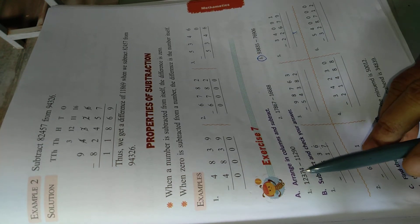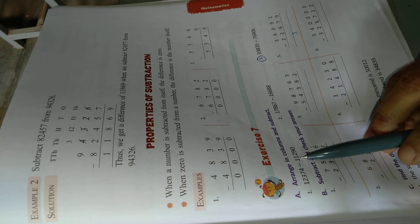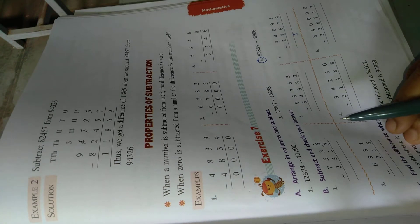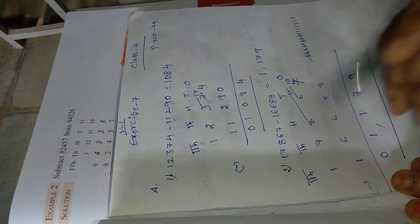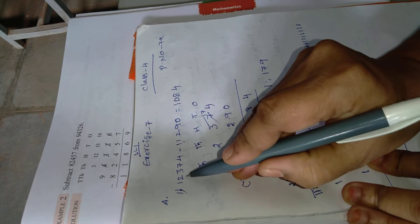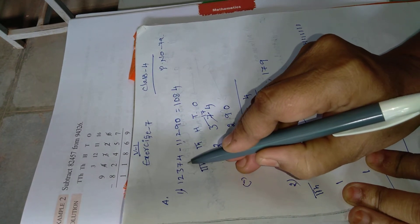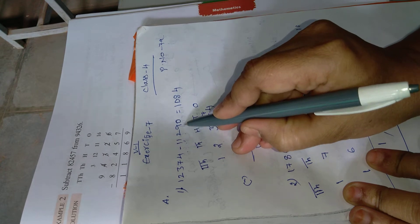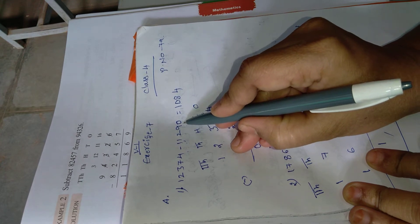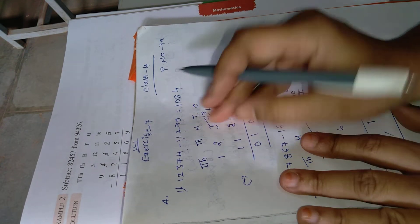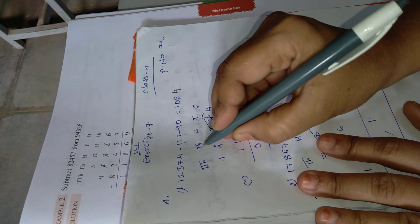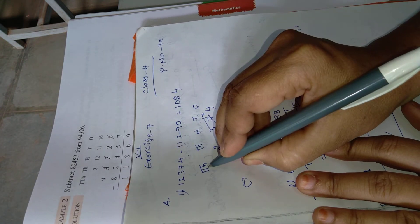So first, today we will arrange numbers in columns. A bit, first problem: 12,375 minus 11,290. So, we are going to do subtraction. First, write the place values: ones, tens, hundreds, thousands, ten thousands.